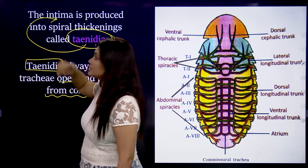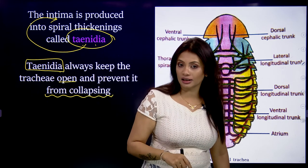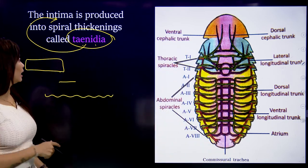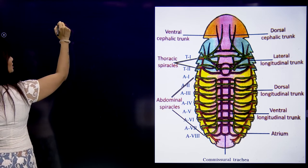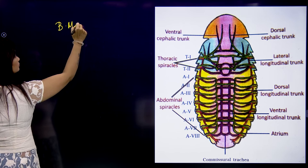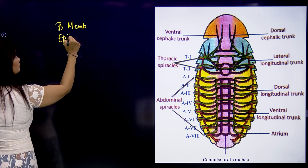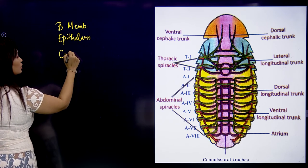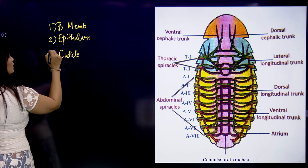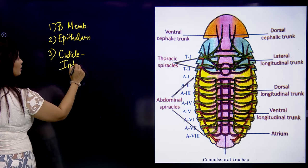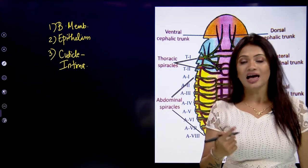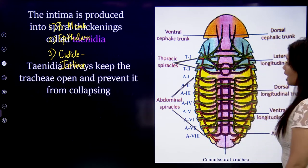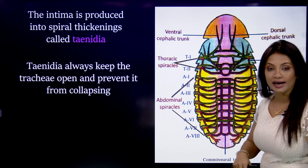To recollect: the trachea has three layers — outermost basement membrane, middle epithelium, and innermost cuticle called the intima. The intima is produced into spiral thickenings called taenidia, and it is the taenidia which prevent the trachea from collapsing and always keep it open.